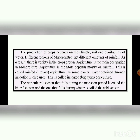The growth and production of a crop depends on the climate, soil, and availability of water in that area. As seen in the map, Maharashtra receives different amounts of rainfall in different areas, so a variety of crops can be grown. Agriculture is the main occupation in Maharashtra.